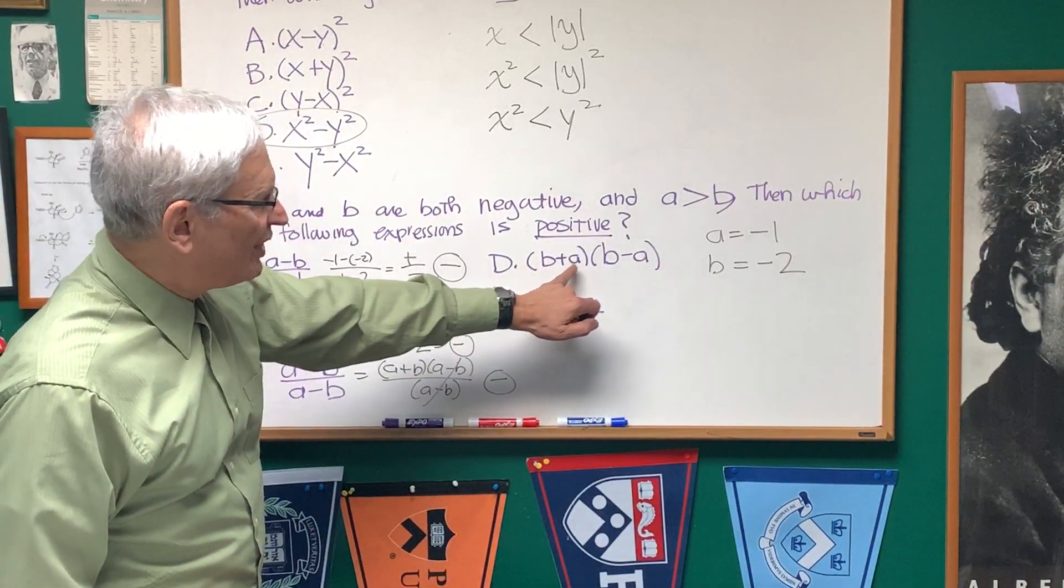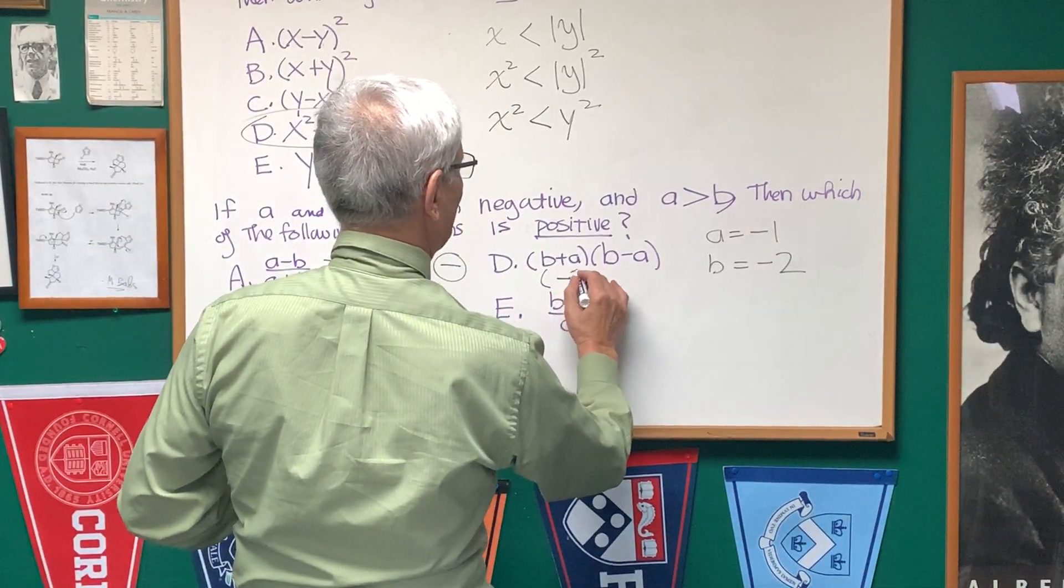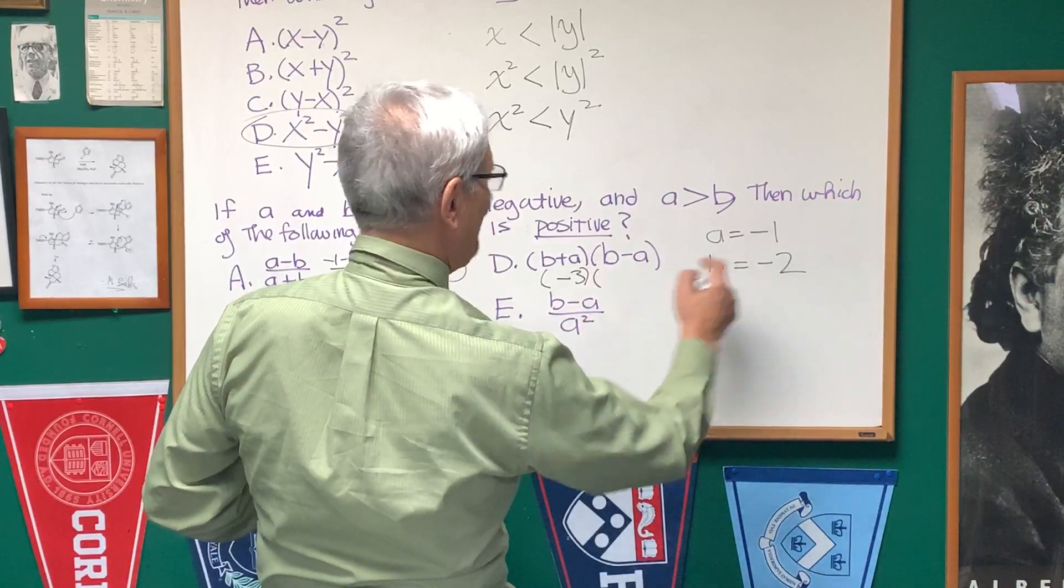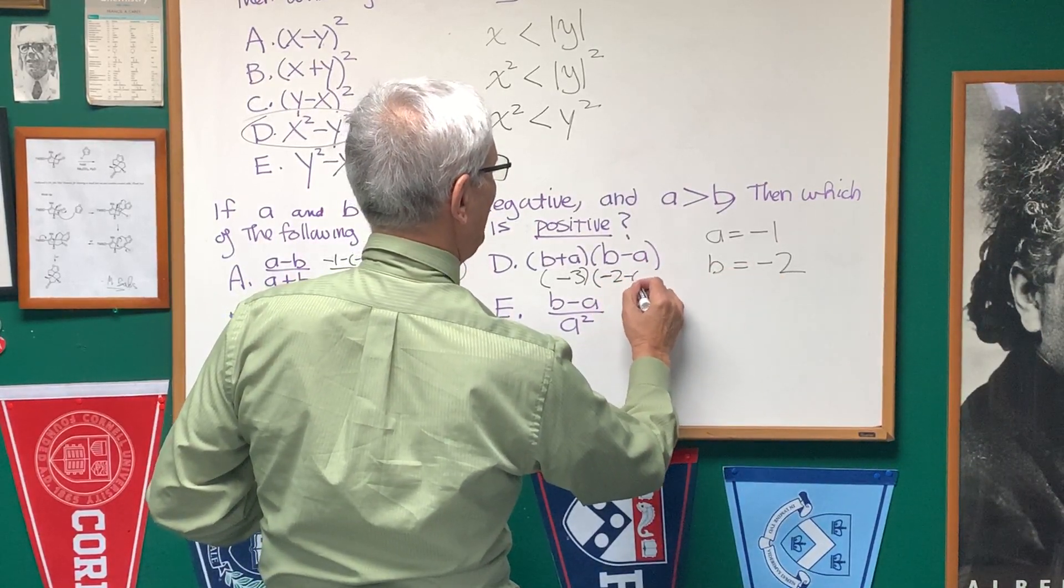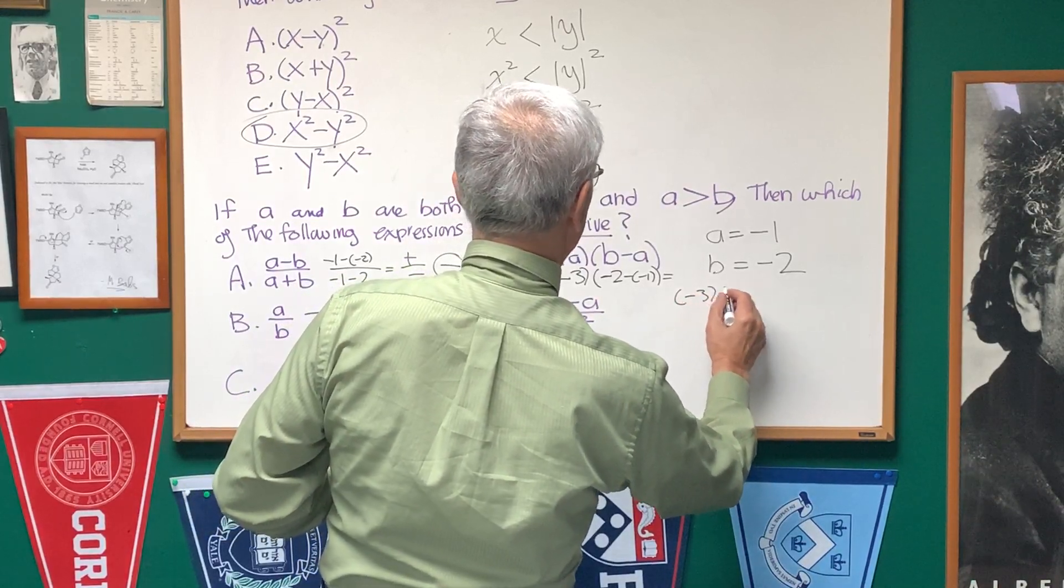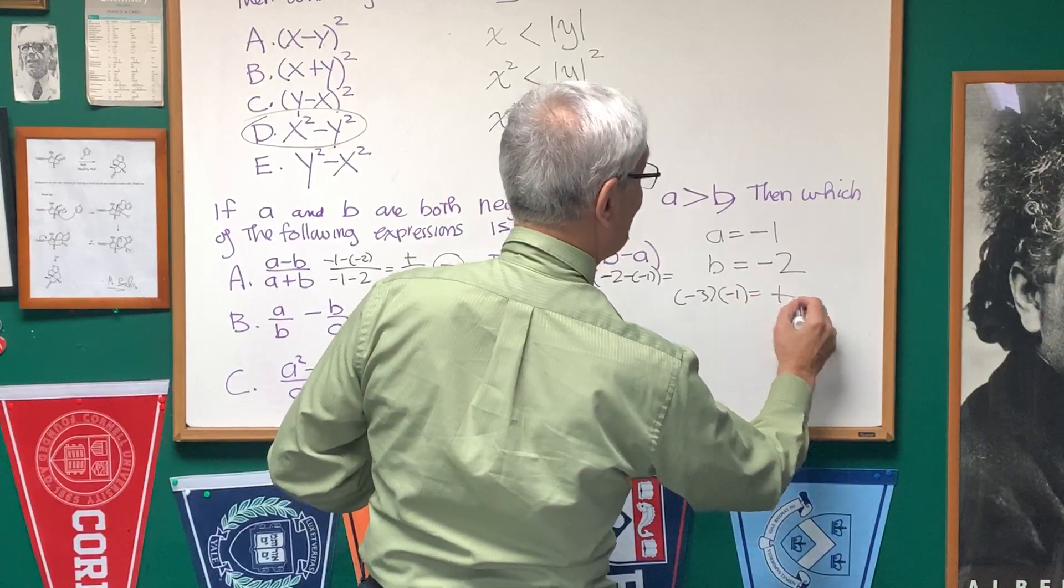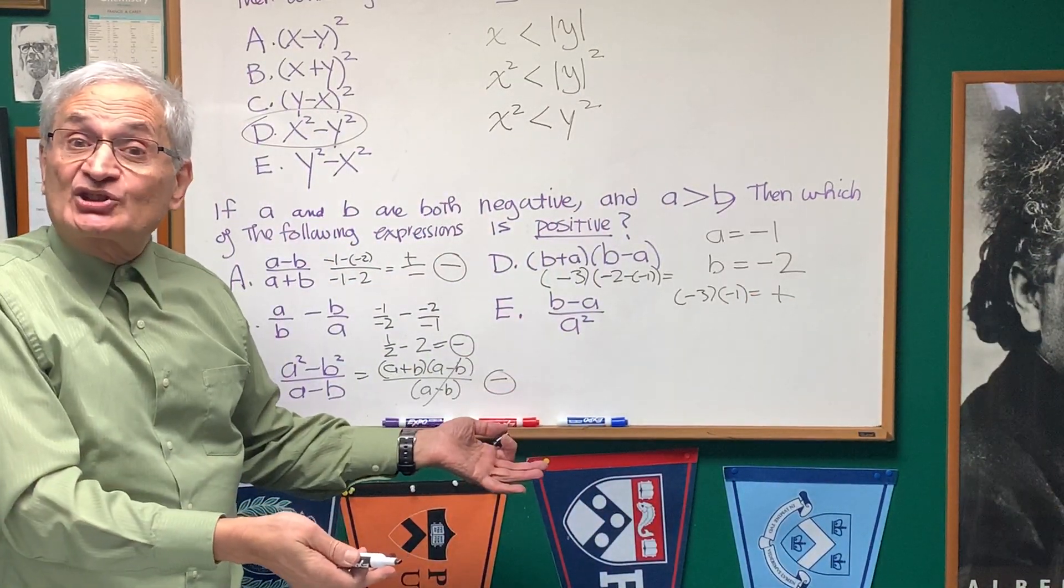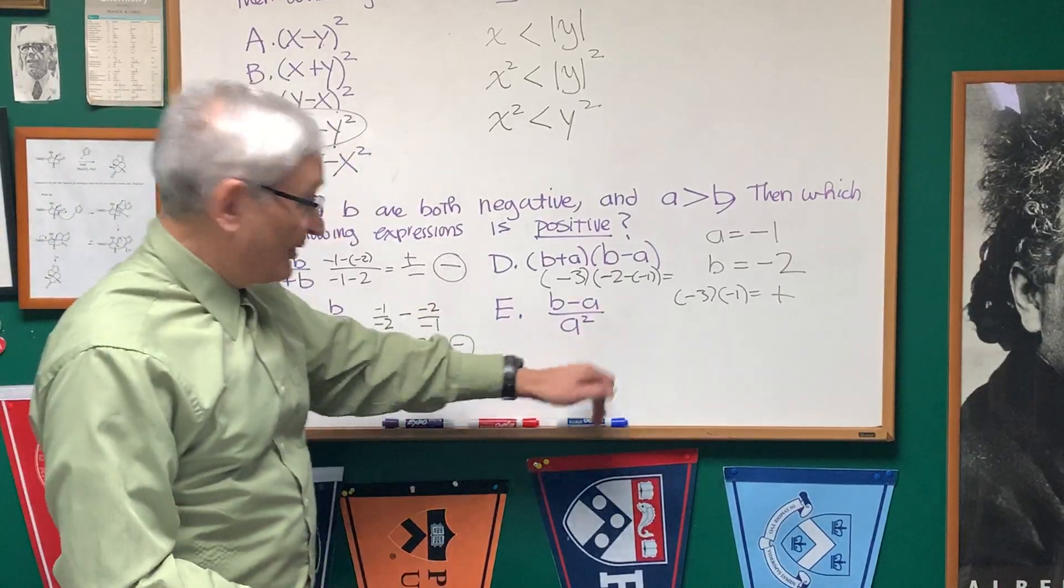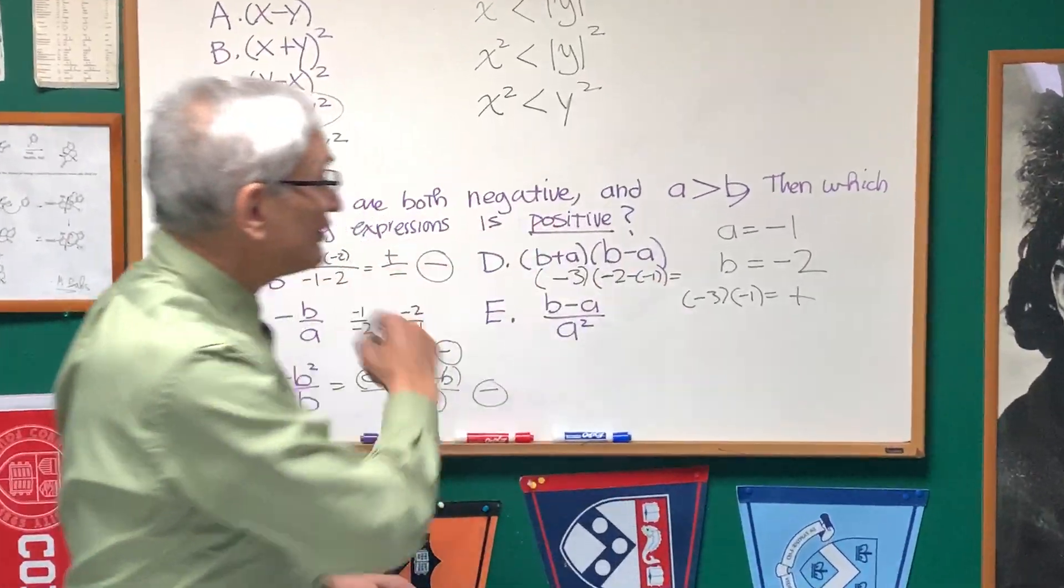Finally, over here, B+A. What's B+A going to be? B+A is -3. And what's B-A? It's -2 minus -1. That's going to be -3 times -1. And that's positive. Finally, we arrived at the expression that is positive. And we don't have to go any further because it's limited to one. So our choice is D.